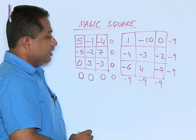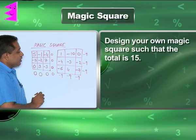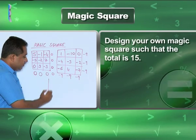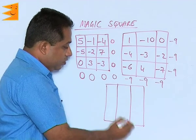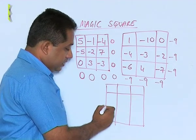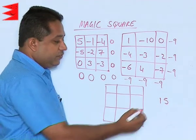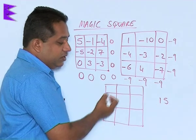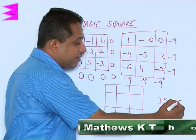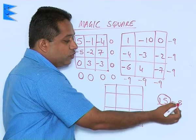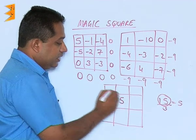Can we design our own magic square? Suppose the question is: design your own magic square such that the total is 15. We are going to make a 3 by 3 magic square on our own — 3 rows and 3 columns — and the total should be 15. The best way to solve this is that since it is a 3 by 3 magic square, we divide 15 by 3 to get 5. That number we will write in the center.